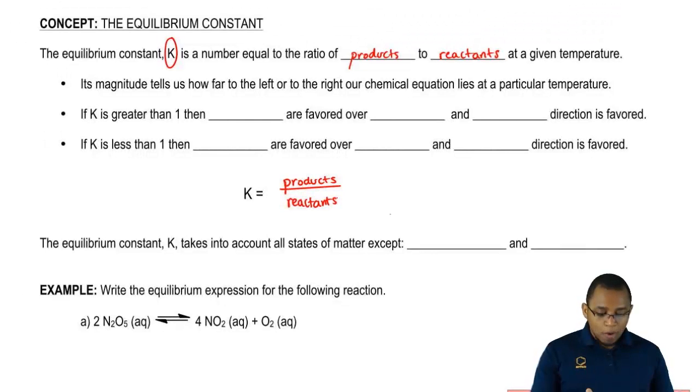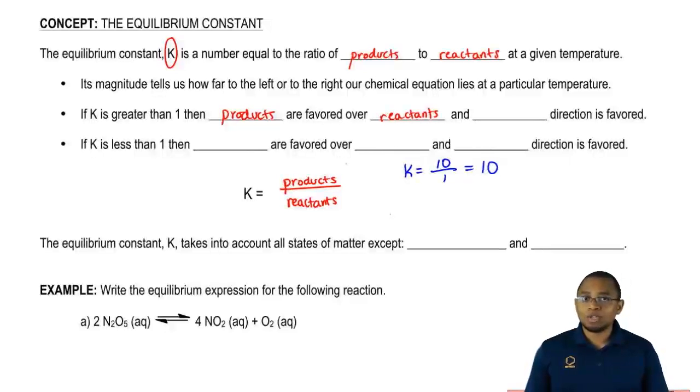If K is greater than 1, then products are favored over reactants. This makes sense because we said K equals products over reactants. Let's say our products are 10 and our reactants are 1. K equals 10, definitely greater than 1. When products are favored over our reactants, we're making more products by going in the forward direction. So the forward direction would be favored.